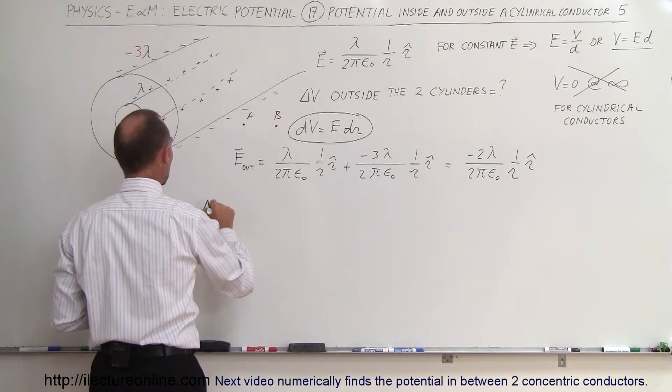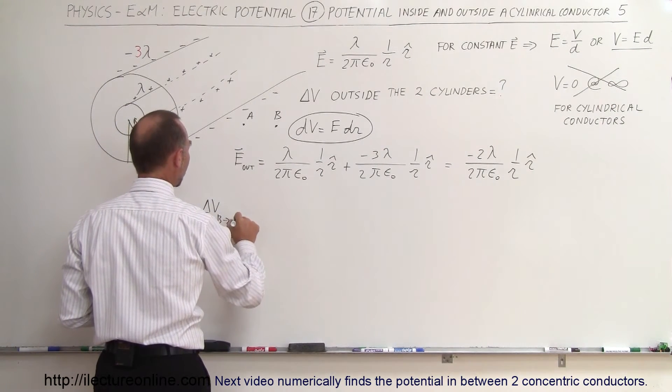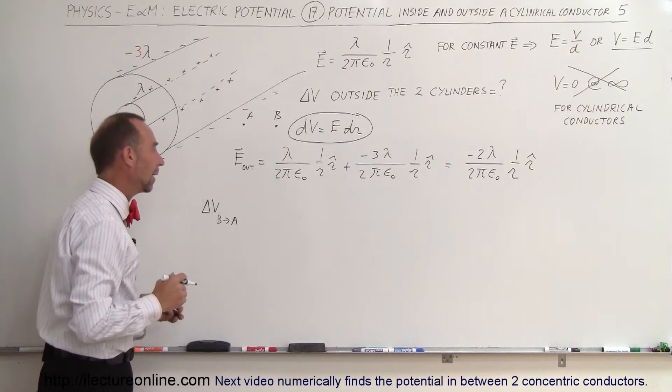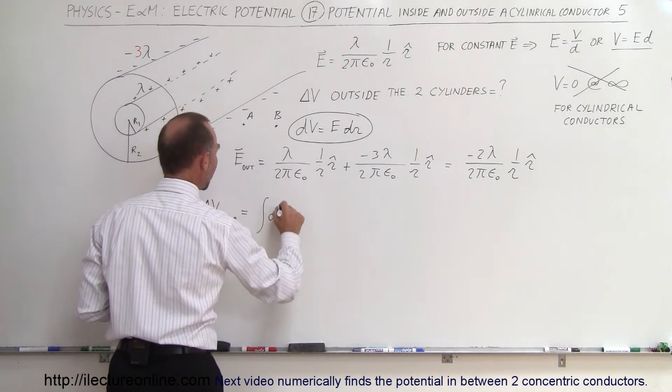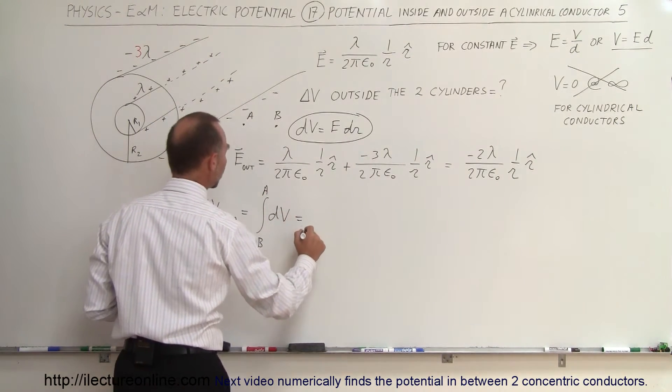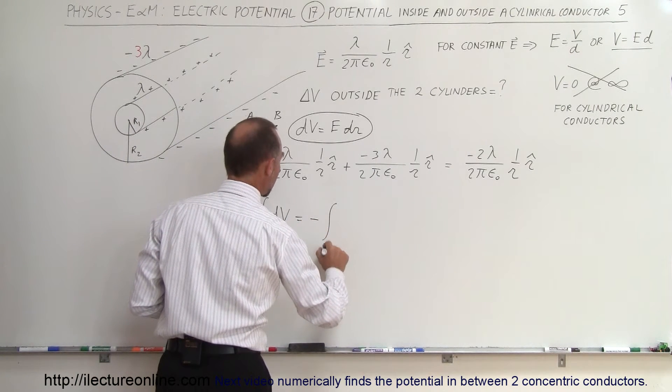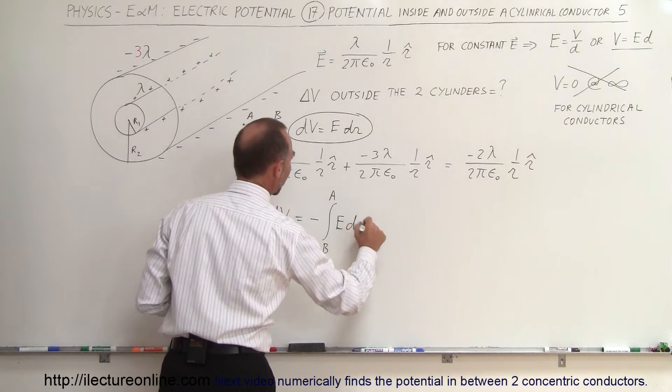We can then say that the change in potential going from B to A, so we're going from a distance farther out, the distance closer by, is going to be equal to the integral of all the little dV's going from position B to position A, which is equal to the negative of the integral from B to A of the electric field times dr.